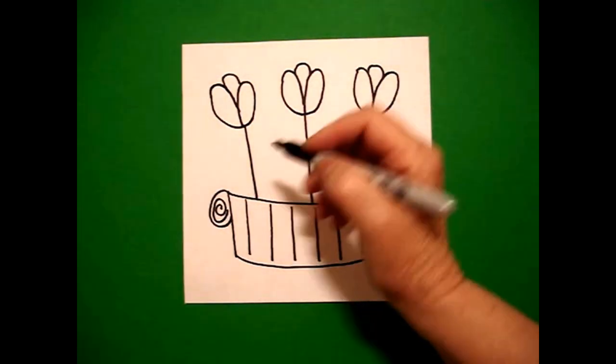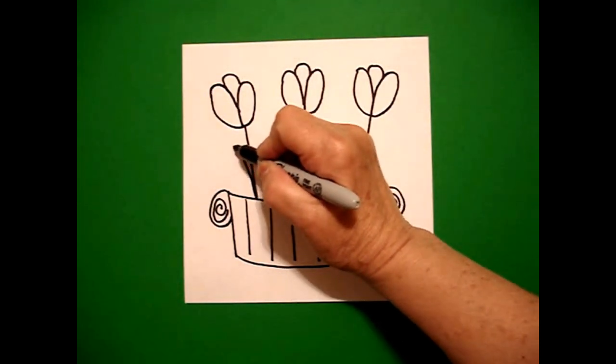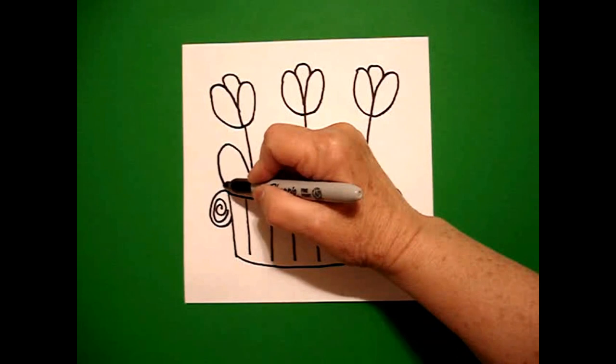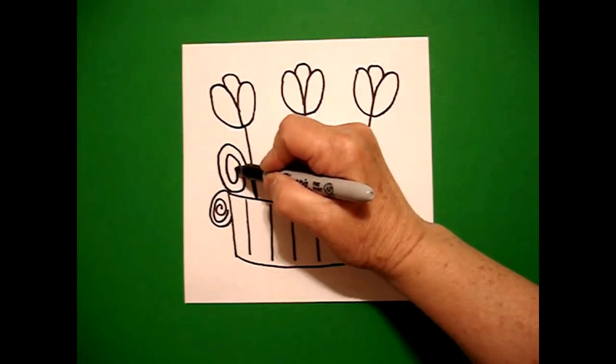Now to do the leaves, we're going to do some more spirals. Watch what I do. I come up, curve line, bring it down, keep going around and around and around.